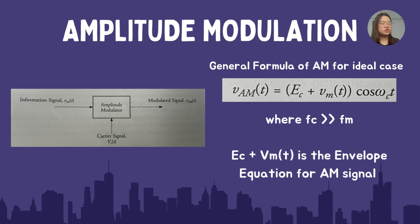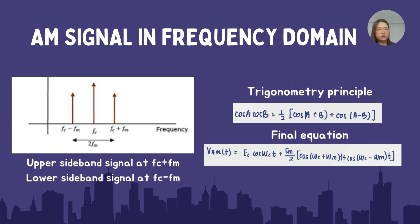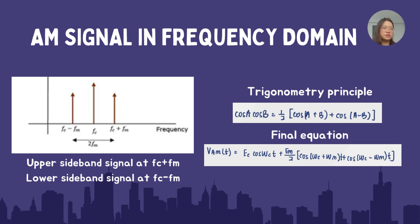Now I'm going to talk about the frequency domain. The graph is very different from the previous one. We can note that the x-axis of this graph is frequency. By using the trigonometry principle, cos A cos B equals 1/2 cos(A+B) plus cos(A-B). When we rearrange it, we will get the final equations.